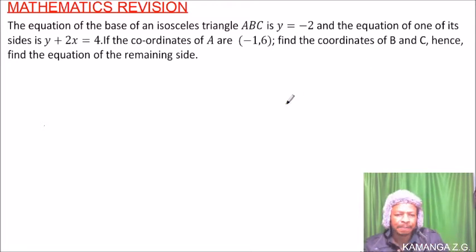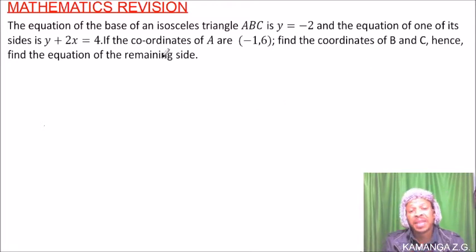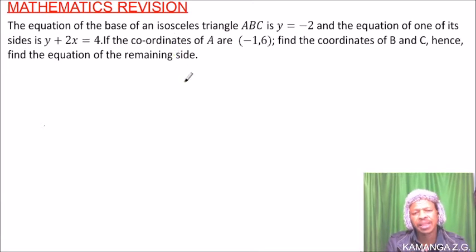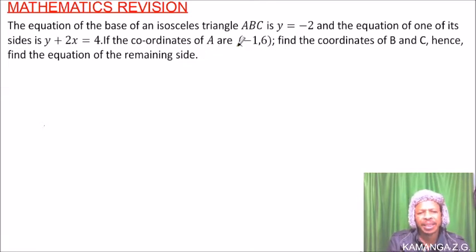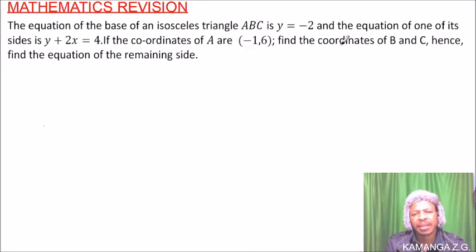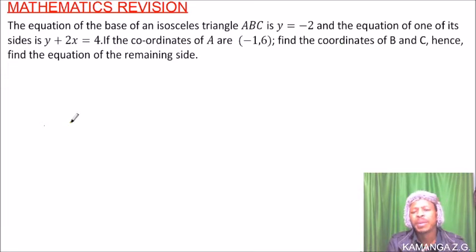There are a few things you need to know. An isosceles triangle is one that has two equal sides, and whose base angles are equal. To answer this, we can make a sketch to guide us.